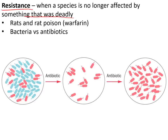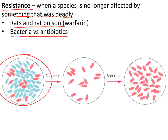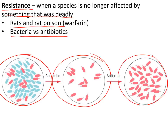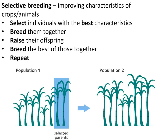Resistance describes how some species evolve the ability to overcome something that used to be deadly to them — for example, how rats can evolve resistance to rat poison or bacteria can overcome antibiotics. There will always be some bacteria naturally more resistant to antibiotics than others. If antibiotics are taken, the more resistant ones survive and pass on their genes, so the resistant population spreads as the non-resistant ones die out.